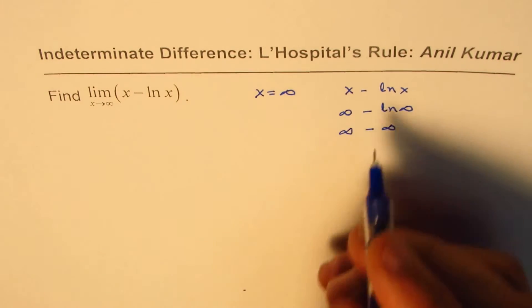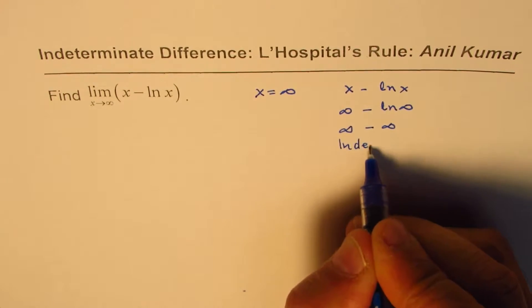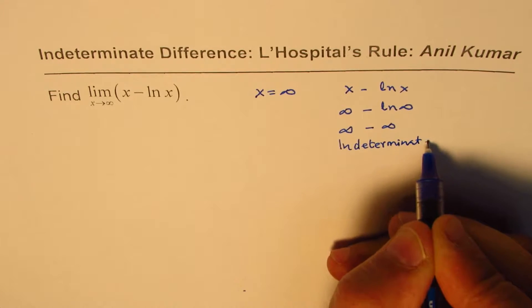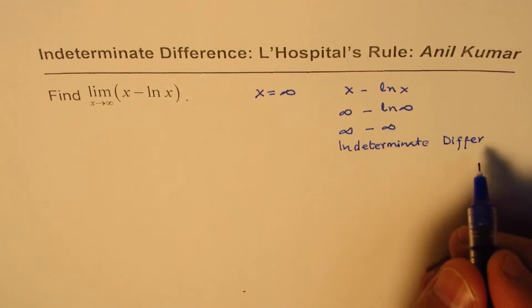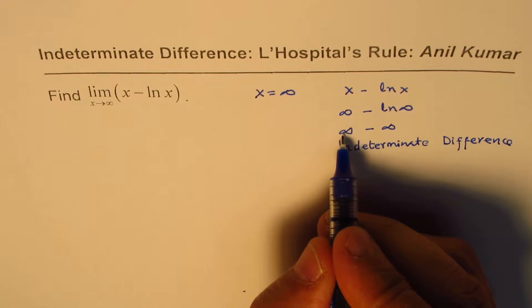Now that is what we call indeterminate difference. This is indeterminate difference. We really cannot find it since we don't know which infinity is bigger, right?